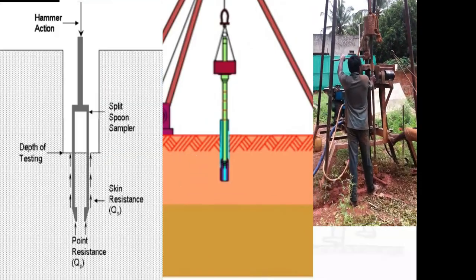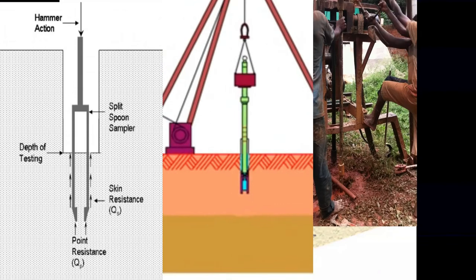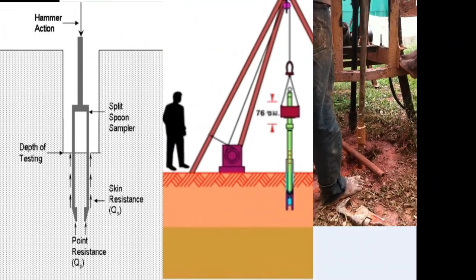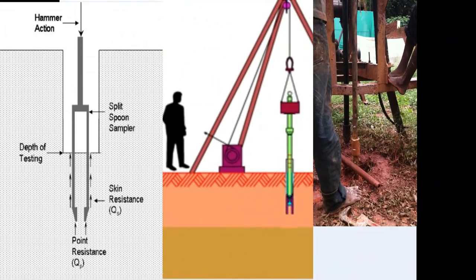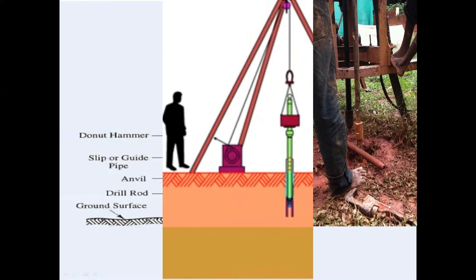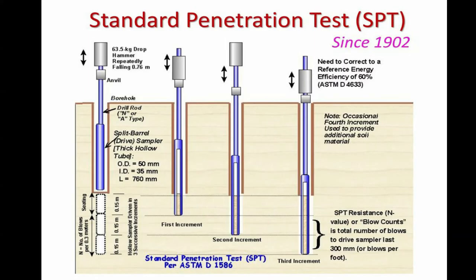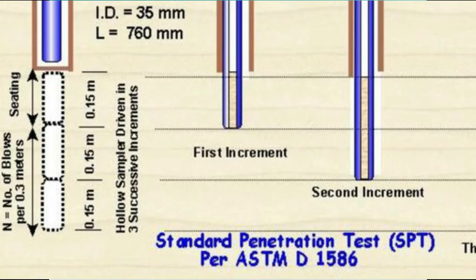The first 150 mm penetration of the sampler is considered as seating drive, where the n value is discarded because disturbed soil is present.